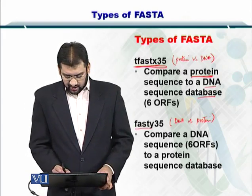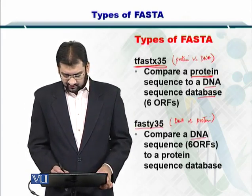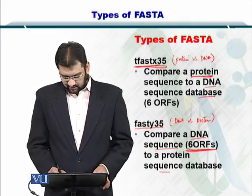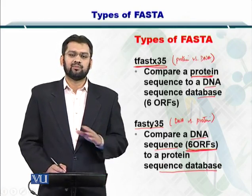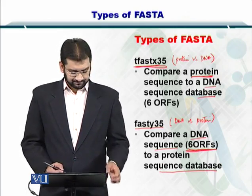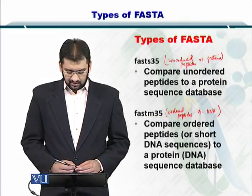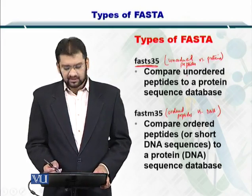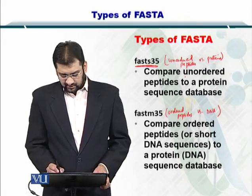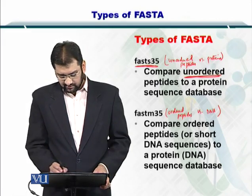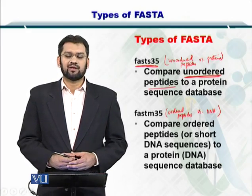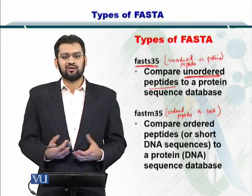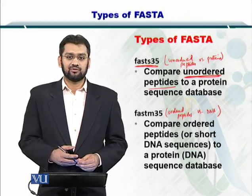Next is the FASTY. It can compare a DNA sequence — that is, all six ORFs, the open reading frames — and you can compare them to the proteins that are there in the protein database. Next is the FASTS35. This is a special type of FASTA because it can help you to compare unordered peptides to a protein sequence database. If you have some unordered peptide, then you can look at the database as well, and this can be an extremely useful and powerful tool.